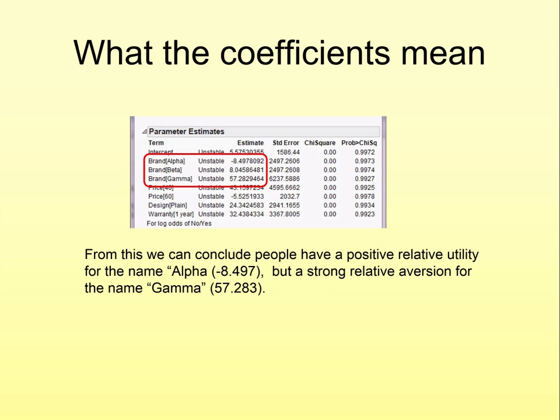Once again, each of the coefficients reverse sign relative to its utility. Hence, if you were to plot these, the way you would do it is to assign a value of zero to the utility of the reference level and then change the sign of all the coefficients.